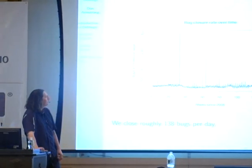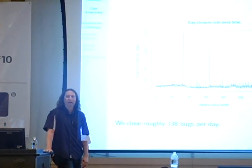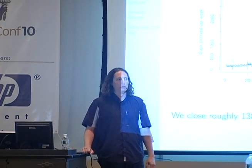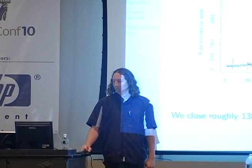This is the bug closure rate over time. This is actually tracking when a bug was archived, not when it was actually closed, because figuring out when it closed is a little bit more difficult. I only have data since I turned back on archiving in about 2008. Some of these big spikes are probably close to release time, or some other time when a whole bunch of packages started flowing back into the archive. We seem to close around 138 bugs per day — of the same order of magnitude as the bugs that were filed. So we're not losing ground to the bugs; we're keeping up, sort of.